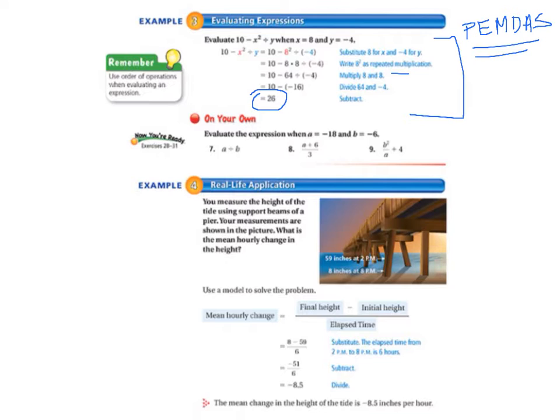Finally, let's take a look at example 4, a real-life application. It says, you measure the height of the tide using support beams of a pier. Your measurements are shown in the picture. And it asks, what is the mean hourly change in the height?